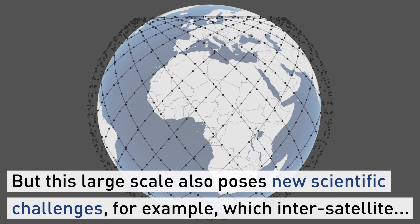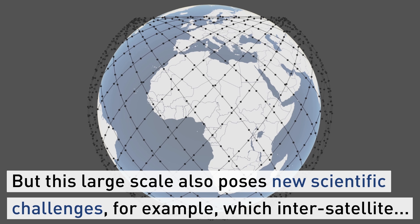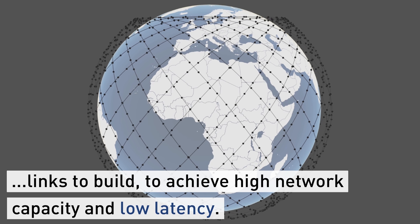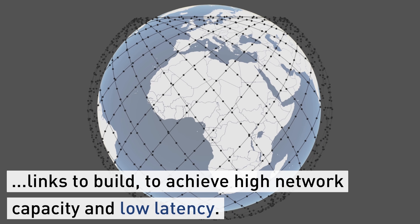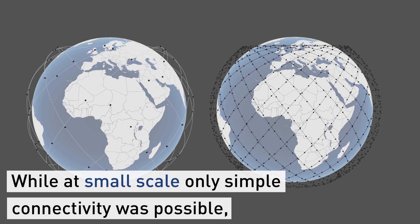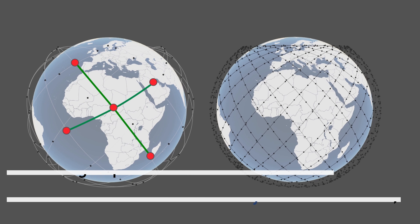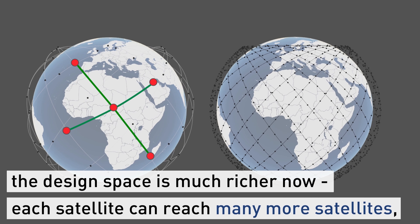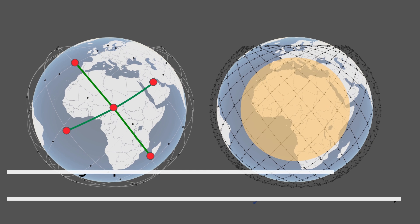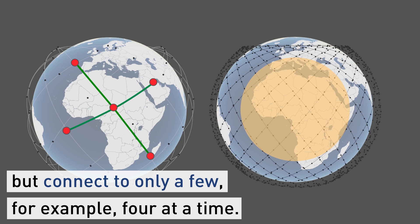But this large scale also poses new scientific challenges. For example, which inter-satellite links to build to achieve high network capacity and low latency? While at small scale only simple connectivity was possible, the design space is much richer now. Each satellite can reach many more satellites but connect to only a few — for example, four at a time.